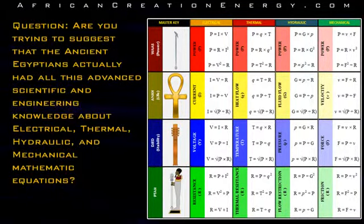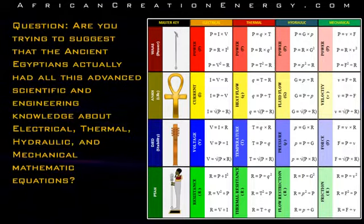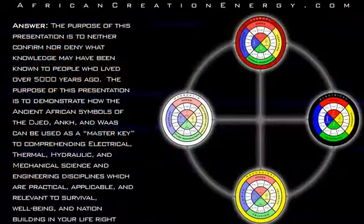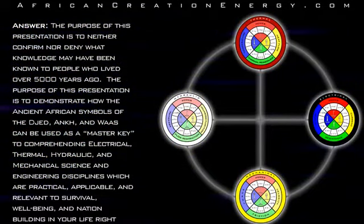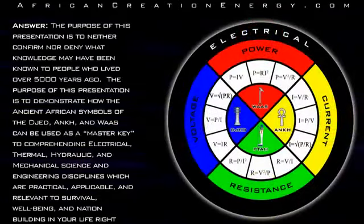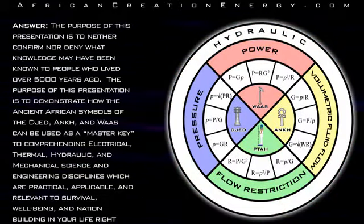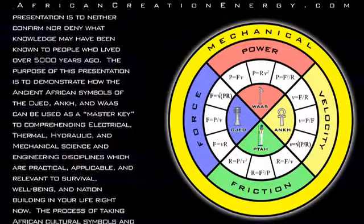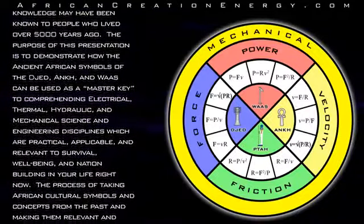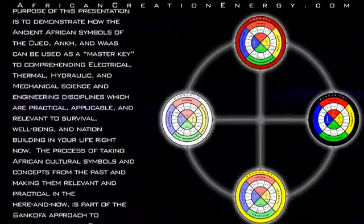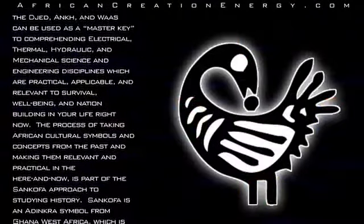Question: Are you trying to suggest that the ancient Egyptians actually had all of this advanced scientific and engineering knowledge about electrical, thermal, hydraulic, and mechanical mathematic equations? Answer: The purpose of this presentation is to neither confirm nor deny what knowledge may have been known to people who lived over 5,000 years ago. The purpose is to demonstrate how the ancient African symbols of the Jed, Ankh, and Wa-S can be used as a master key to comprehending electrical, thermal, hydraulic, and mechanical science and engineering disciplines which are practical, applicable, and relevant to survival, well-being, and nation-building in your life right now. The process of taking African cultural symbols and concepts from the past and making them relevant and practical in the here and now is part of the Sankofa approach to studying history.